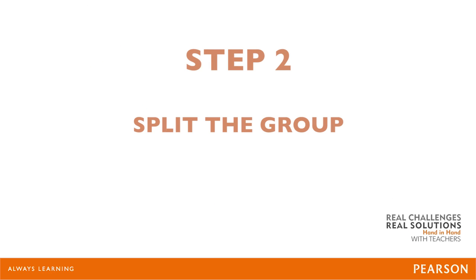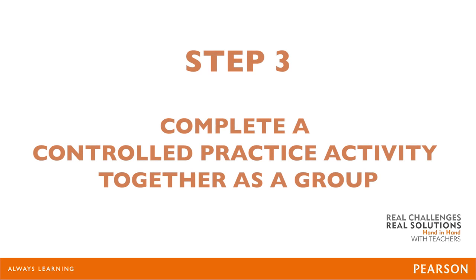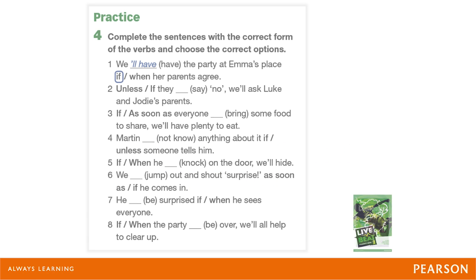Step 2: Now I'm going to split the group. Less able students will stay with me for a presentation on the target language, and more able students are going to use MyLab or similar online materials and do a receptive activity — for example, a reading that I've pre-selected which contains the target language. Step 3: We're going to come back to lockstep and complete a controlled practice activity together as a group. We'll use exercise 4 from the book. I'll be monitoring very closely at this point to see how the more able students get on.